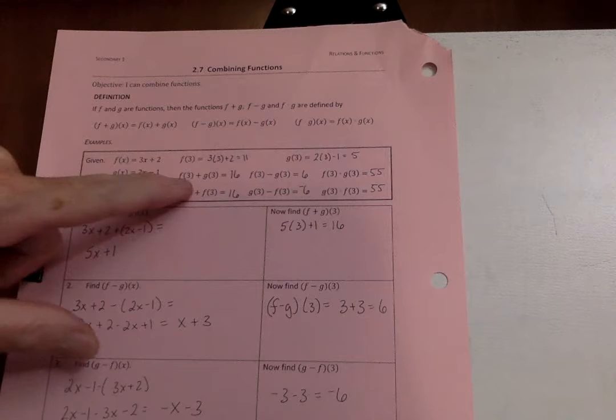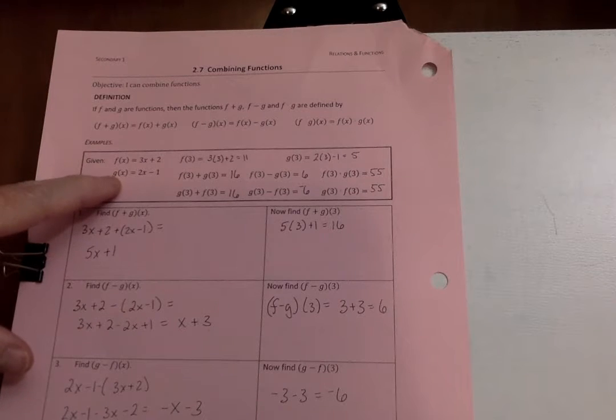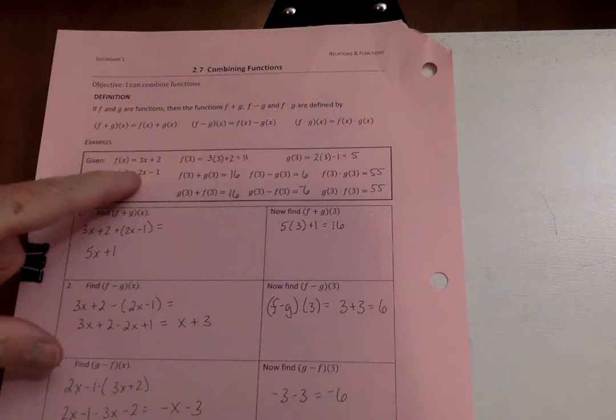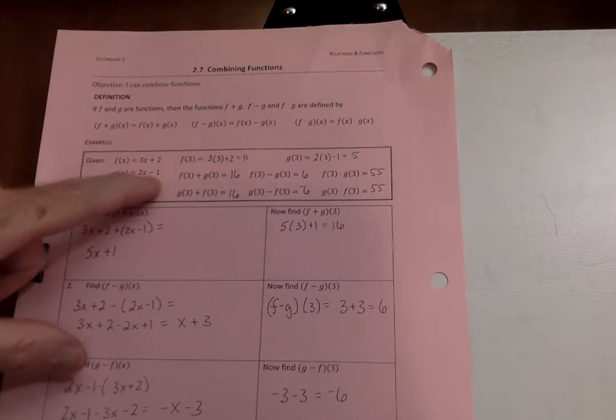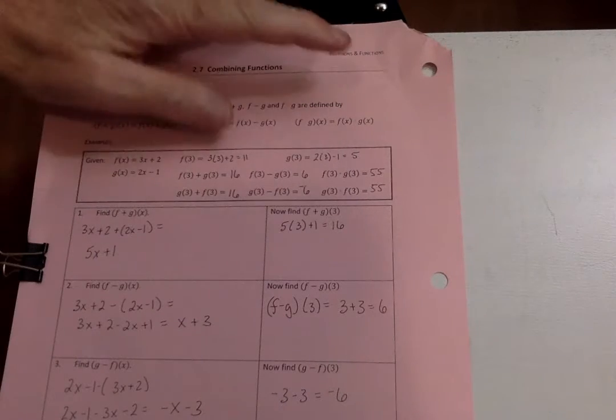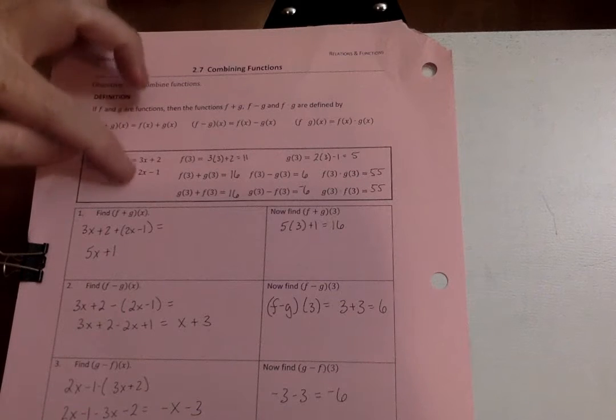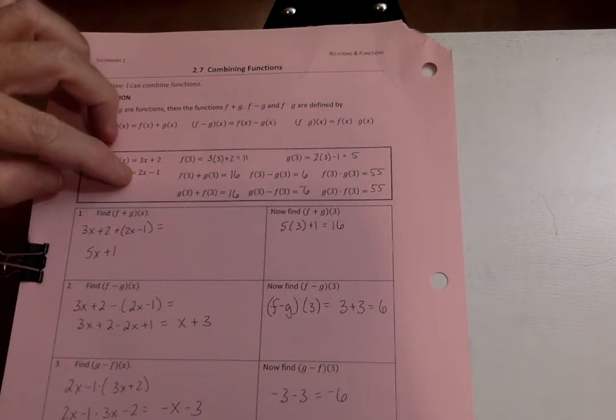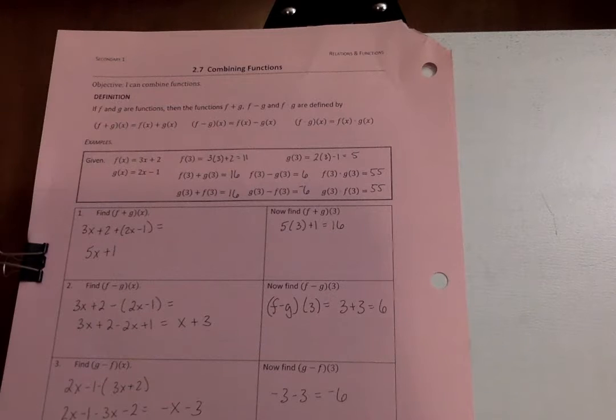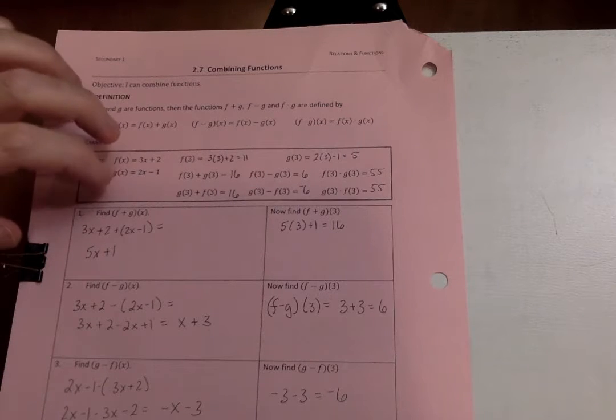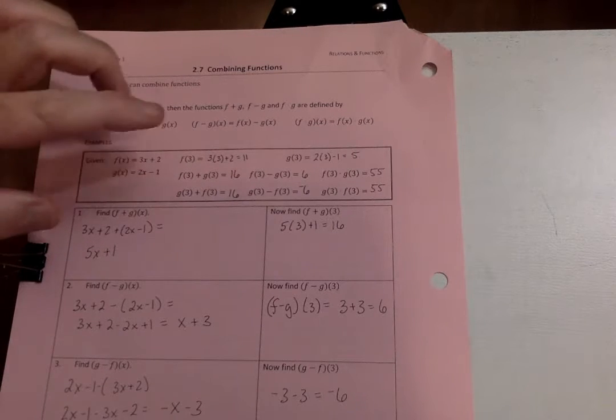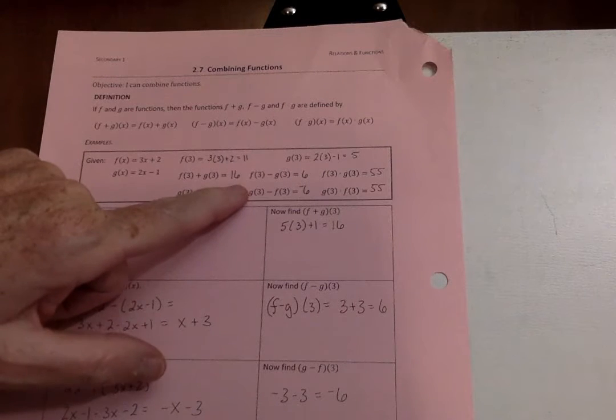And so here, they're figuring out, okay, what is g of 3? g of 3, 2 times 3 is 6, minus 1 is 5. So they figured it out separately, and then if you went ahead and combined this, 3x plus 2x was 5x plus 1, and if x is 3, 5 times x is 15, plus 1 is 16, you get the same answer here.